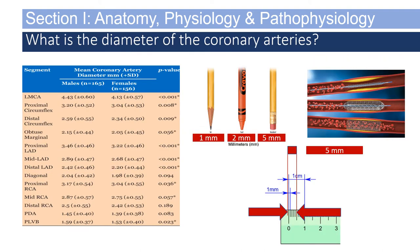How hard is it to block one of the coronary arteries? When we look at the diameter of the coronary arteries, we can tell it doesn't take a whole lot. The images below show a pencil, crayon, and eraser between one millimeter and five millimeters — that is the average diameter of most coronary arteries. The PDA is 1.39 to 1.45 millimeters, whereas the LMCA, one of the larger coronary arteries, is 4.13 to 4.43 millimeters.